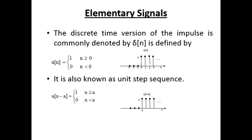The discrete time version of the step function is denoted u(n), defined as u(n) = 1 when n ≥ 0 and 0 when n < 0 — also known as the unit step sequence. The shifted version u(n − a) = 1 when n ≥ a and 0 when n < a.